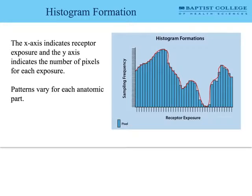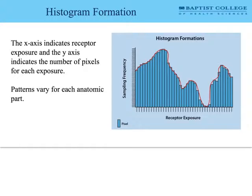Digital images consist of ranges of data values from low to high exposures, depending on technique and subject factors. The histogram graphically represents a collection of exposure values extracted from the receptor. The x-axis indicates the receptor exposure amount, and the y-axis indicates the number of pixels for each exposure value. The ADC must convert, or quantize, the continuous stream of electrons into unique digital values. As long as it's receiving a signal, it continues quantizing that into histogram values.